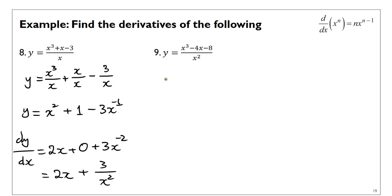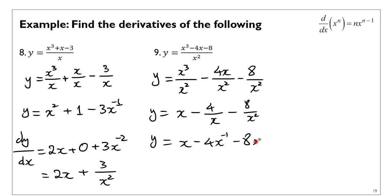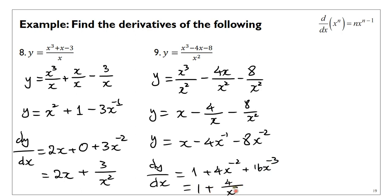Example 9 is very similar to 8. Split the fraction: x cubed over x squared, minus 4x over x squared, minus 8 over x squared. Simplify to x minus 4 over x minus 8 over x squared. Then bring anything in the denominator up: minus 4x to the power of negative 1 minus 8x to the power of negative 2. Derive: plus 4x to the power of negative 2, plus 16x to the power of negative 3. You can put terms back in the denominator if you prefer, but either form is fine.